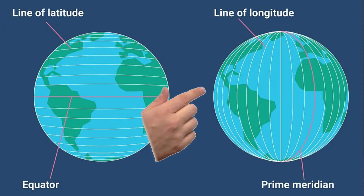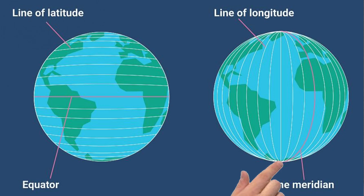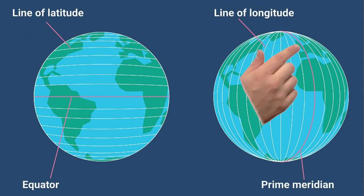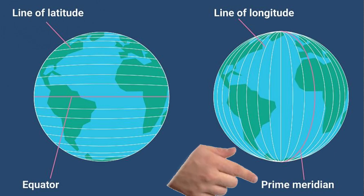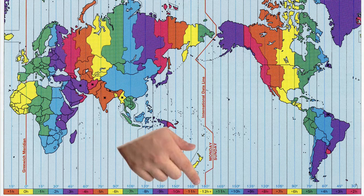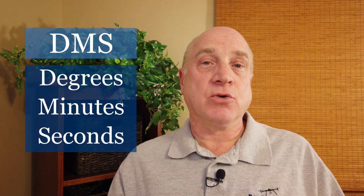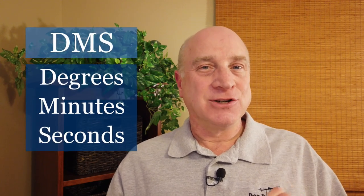Lines of longitude are different. They divide up the globe like wedges of an orange and all meet at the poles. Zero degrees longitude runs through Greenwich, England and is called the prime meridian. Meridians of longitude are numbered east and west from there, meeting in the Pacific at 180 degrees. The international dateline roughly follows the 180th meridian of longitude.